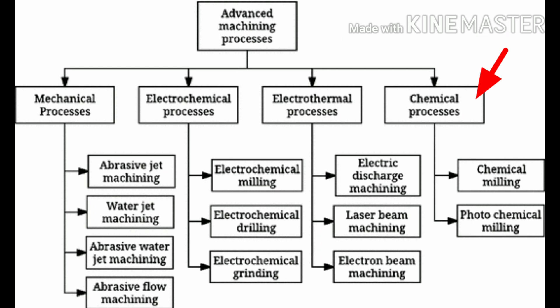The third type is chemical machining. In this category there are two processes: chemical machining and photochemical machining. In these processes, chemical reactions are used to remove materials. The last type is electrochemical machining. In this type there are three processes: electrochemical milling, electrochemical drilling, and electrochemical grinding. In electrochemical processes, both electrical and chemical energies are used, similar to the electrolysis process.